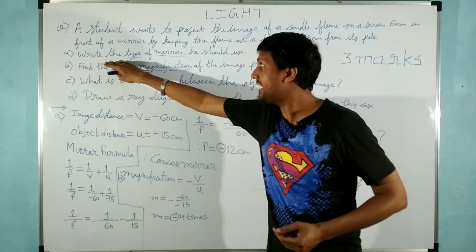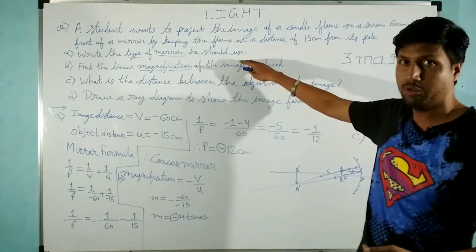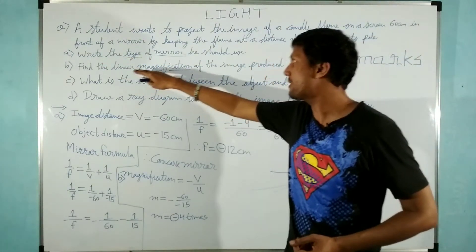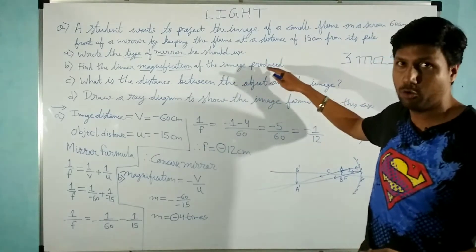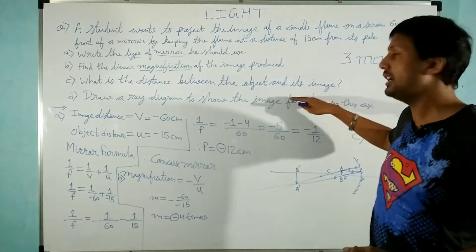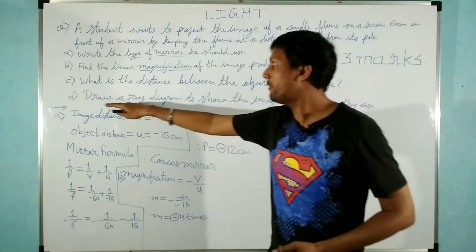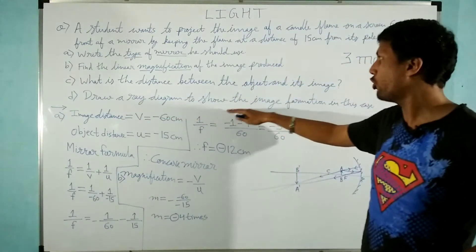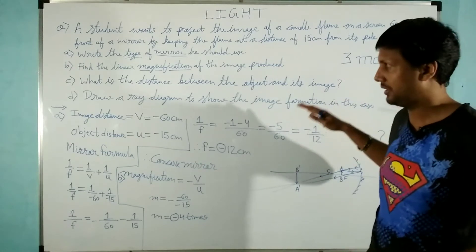First part is write the type of mirror he should use. Second part is find the linear magnification of the image produced. Third part is what is the distance between the object and its image. And the fourth part is draw a ray diagram to show the image formation in this case.